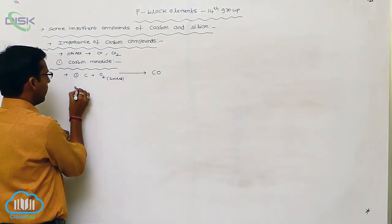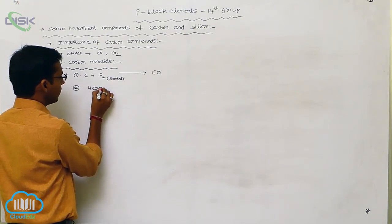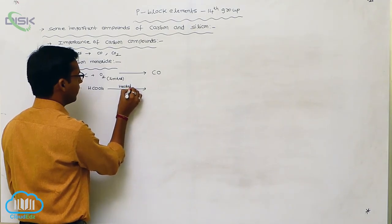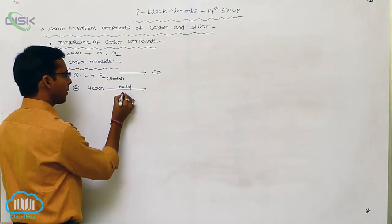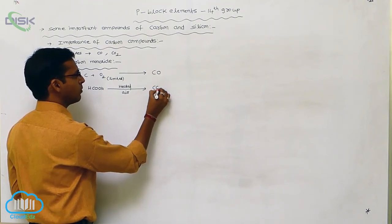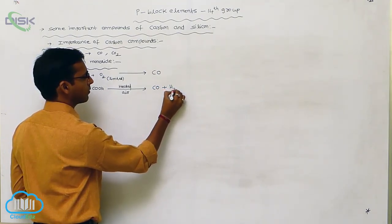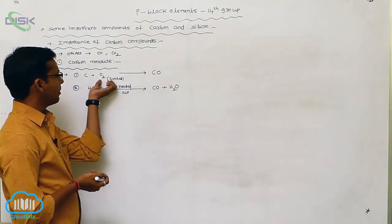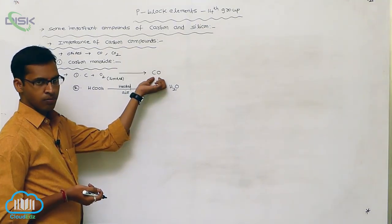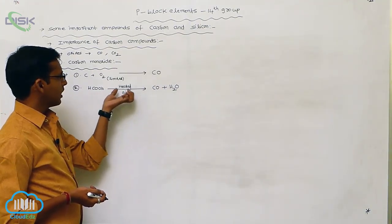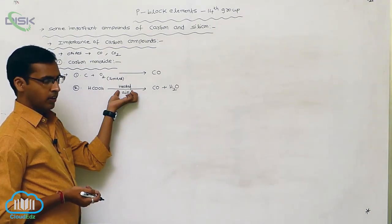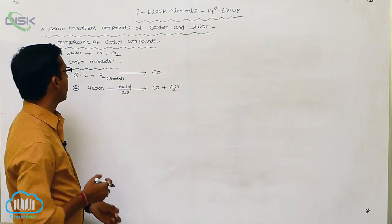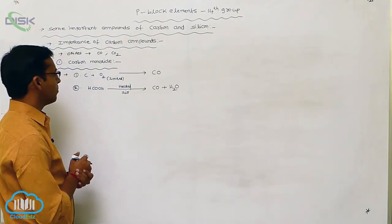Alternatively, formic acid is strongly heated in the presence of air, giving carbon monoxide and water. So the preparation methods are: carbon reacted with limited oxygen gives carbon monoxide, or formic acid heated in air gives carbon monoxide and water.